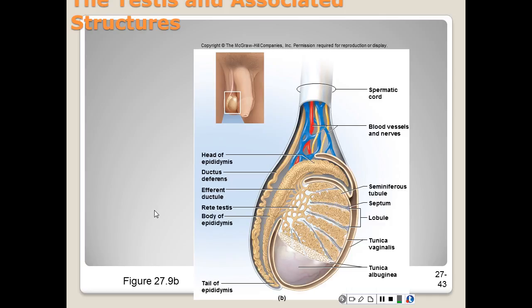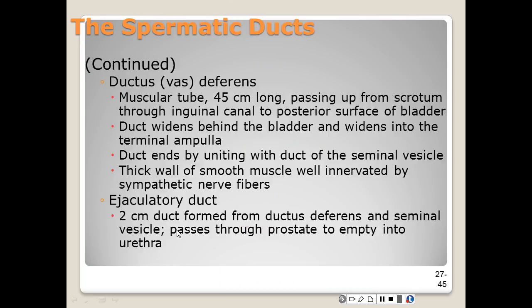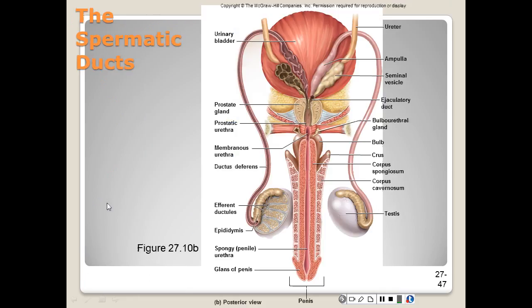The male urethra is shared by the reproductive and urinary systems. It is about 18 centimeters long and consists of three regions: the prostatic, the membranous, and the spongy — or penile — urethra. The urethra cannot pass urine and semen simultaneously; it is either one or the other.